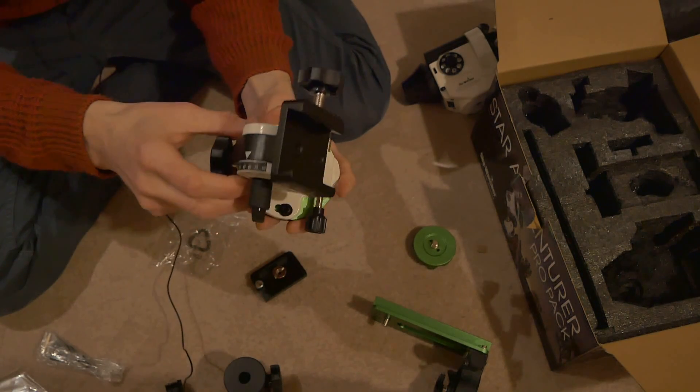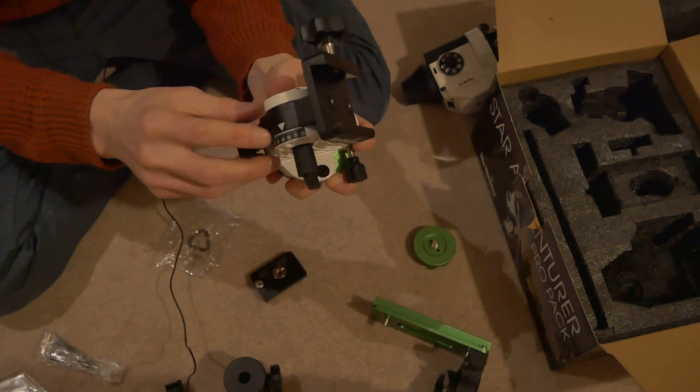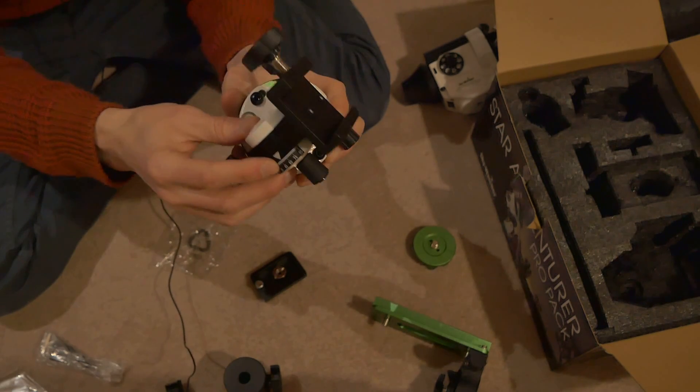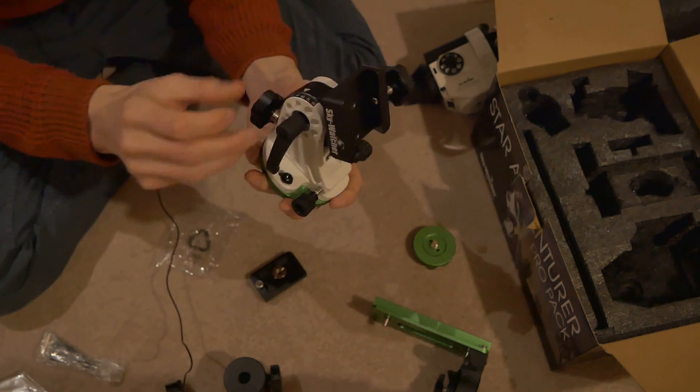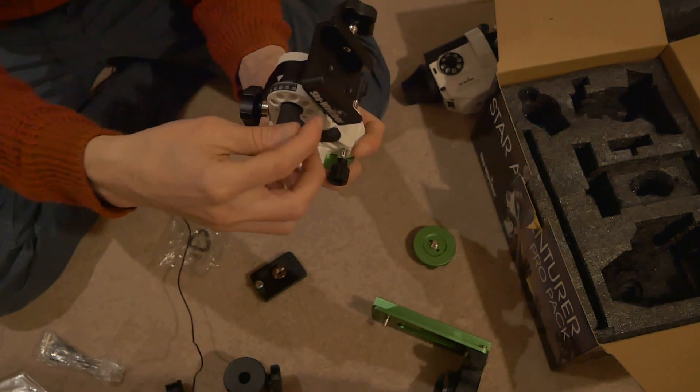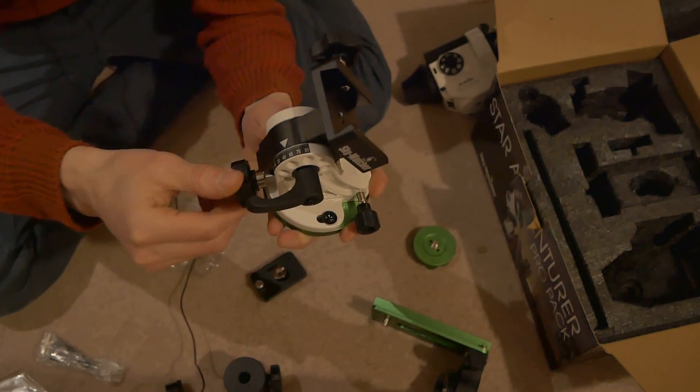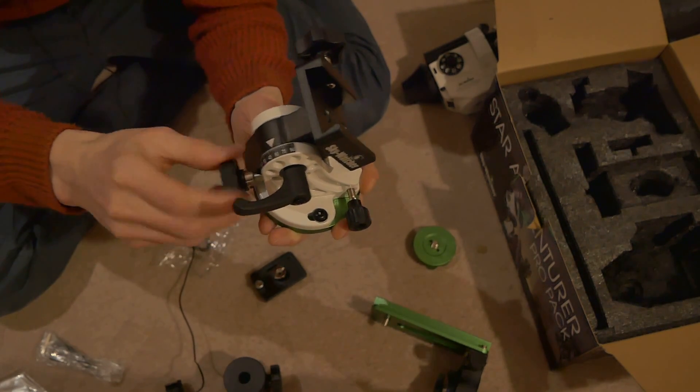So this is the equatorial wedge and I need to set this to 52 degrees in England. You can do it with the clutch on the side and then adjust it with this screw on the front.